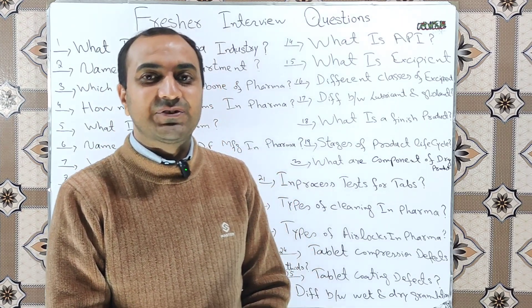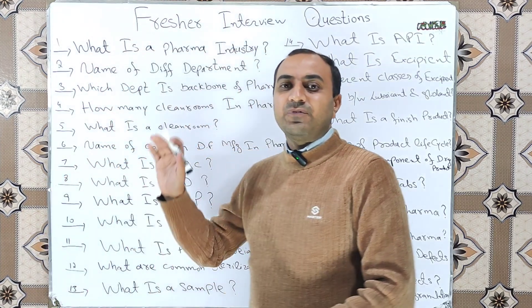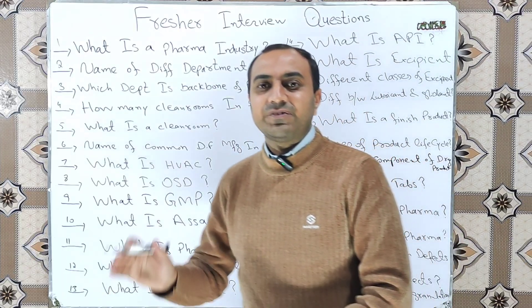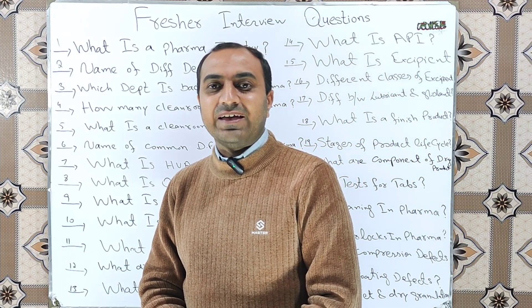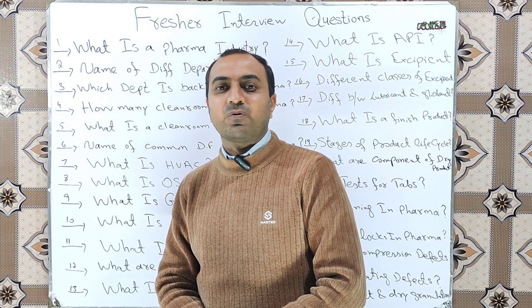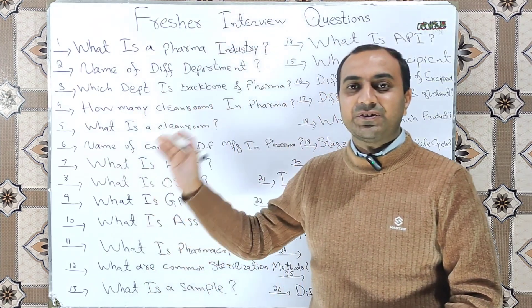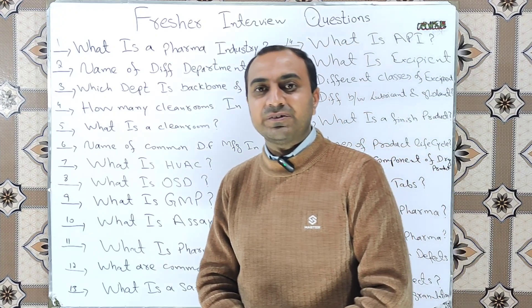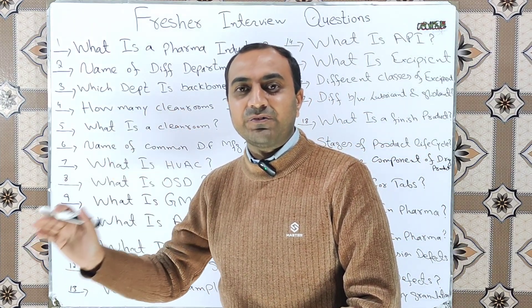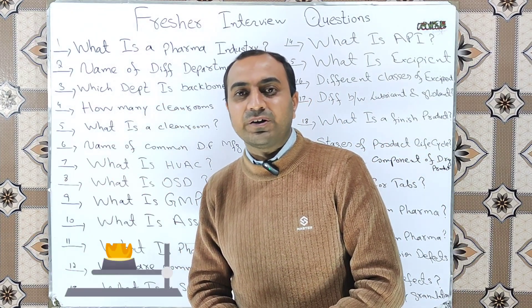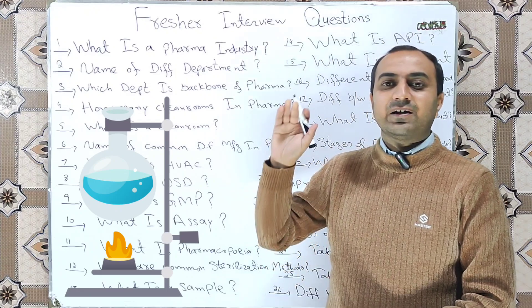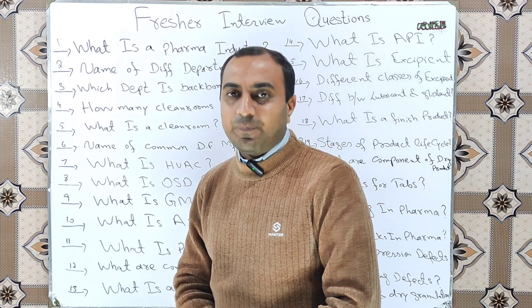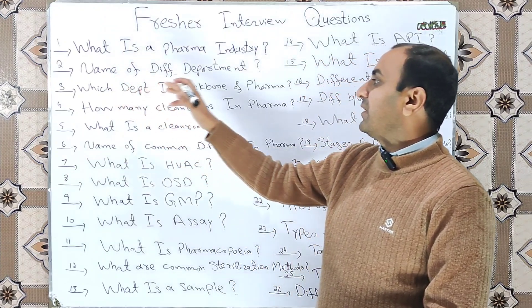The first question is: what is the pharma industry? The pharma industry is a place which has a license from regulatory bodies to manufacture drug products from raw materials. The quality of drug products is controlled by the Quality Control department, and quality is ensured by the Quality Assurance department.